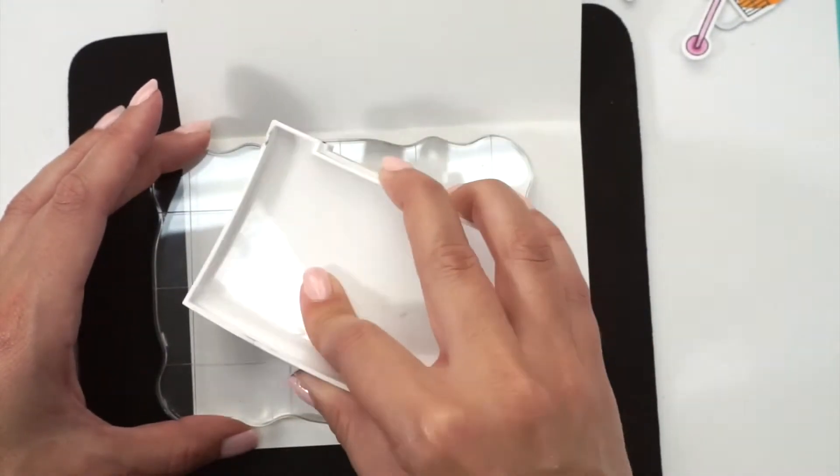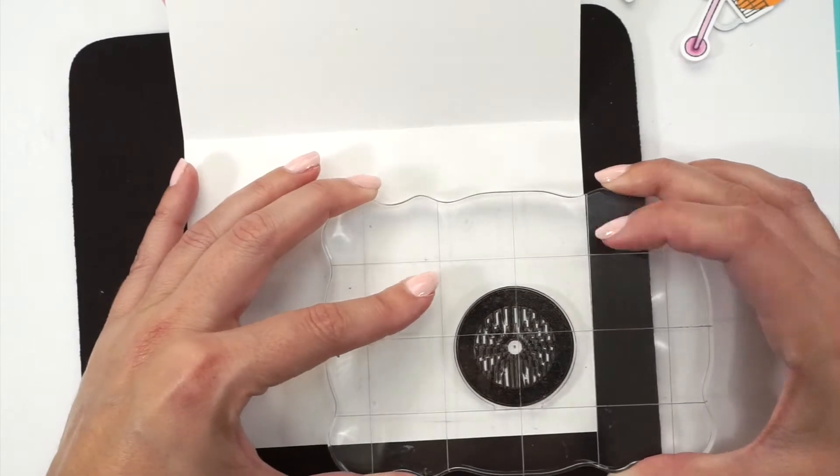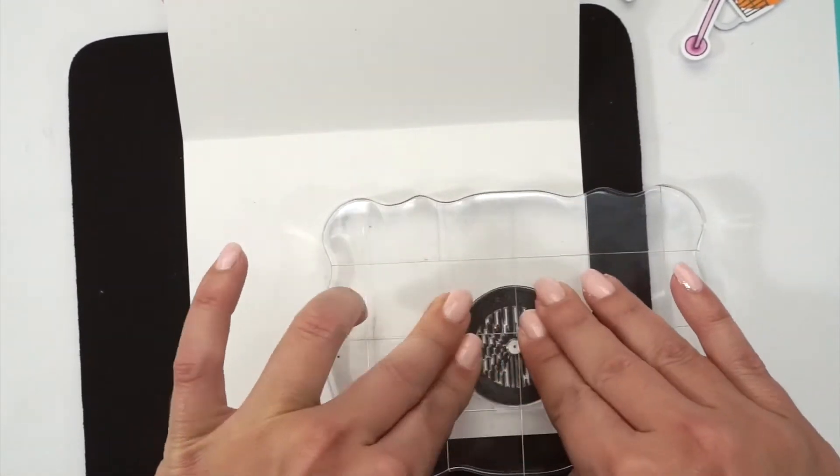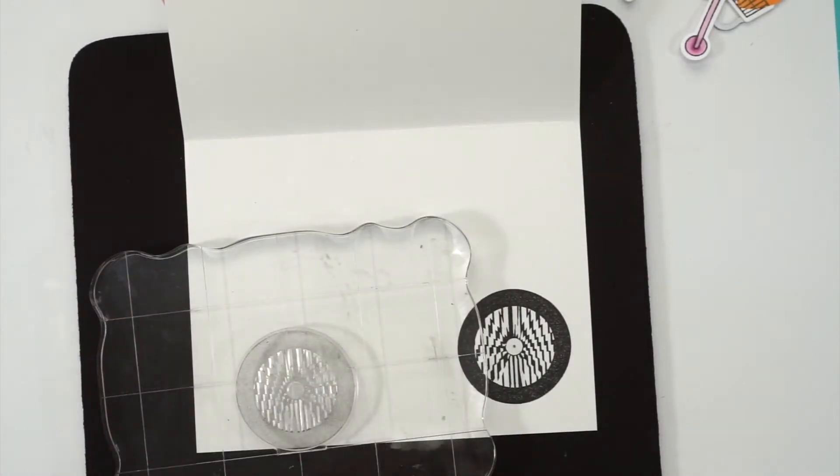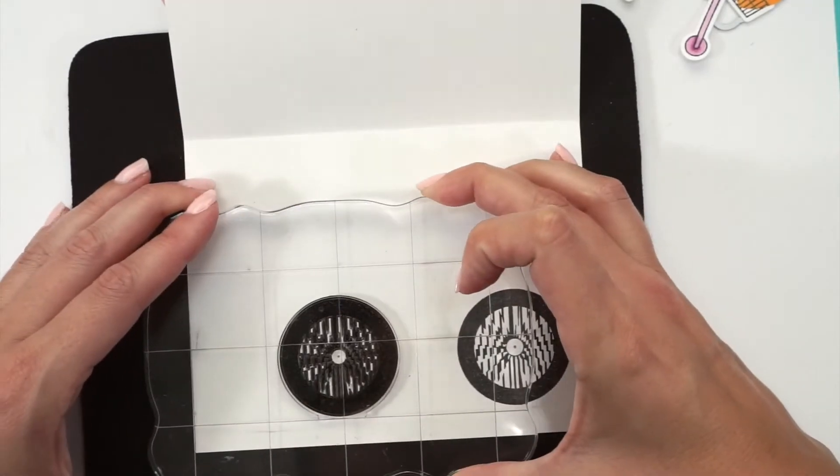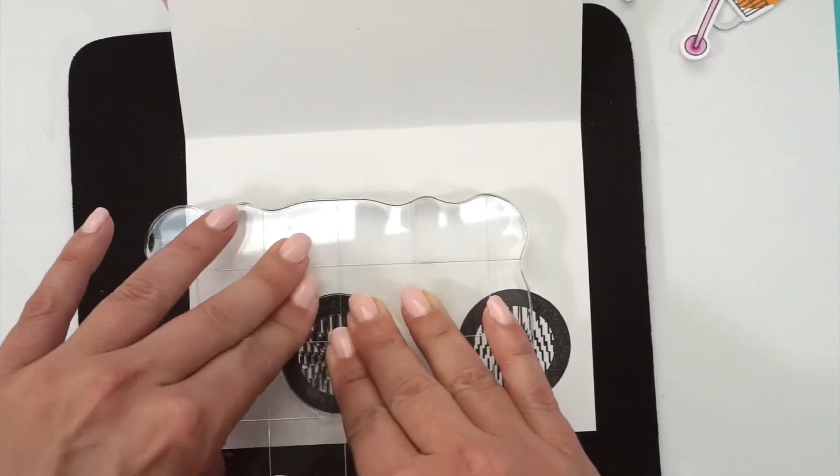This stamp also has a straight edge, so it's easier for you to align it with your block and you know you're stamping straight. Also, peek through the center of the stamp and you can see that mark that we made before with the pencil. So you can center the wheel and make sure that you're stamping straight and in the right spot.